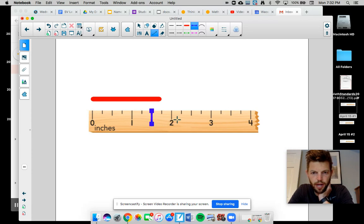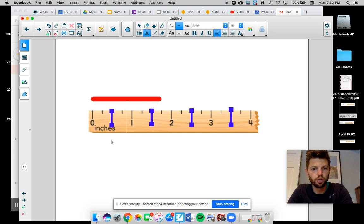So there's one and a half. Here's two and a half. Three and a half. Now something could just be half an inch, right? Not even one. So this would be half.